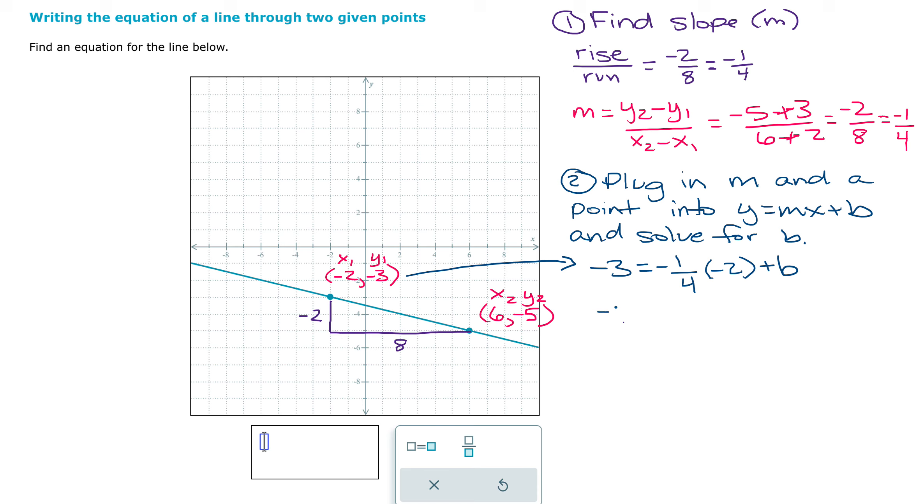We have negative three equals negative one-fourth times negative two is going to be positive two-fourths. And so this is also going to be known as one-half. So I'll write that over here. And then lastly, I'm going to subtract away that one-half to get b.